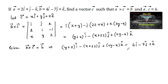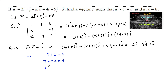Since two vectors are equal if their scalar components are equal, comparing both vectors we can write: y plus z is equal to 4 — equation 1; x plus 2z is equal to 7 — equation 2; and 2y minus x is equal to 1 — equation 3.